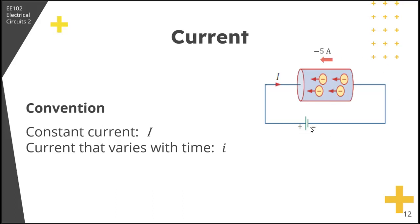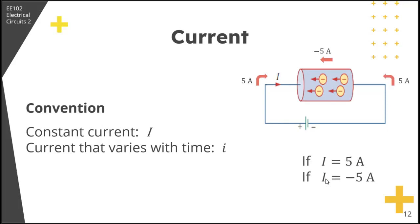If I equals 5 amperes, the flow is from the positive terminal to the negative terminal. If I equals negative 5 amperes, the negative sign indicates the direction of current flow is reversed, but the magnitude remains the same — 5 amperes. So if positive corresponds to clockwise direction, then negative 5 amperes corresponds to counterclockwise direction, but the magnitude is the same.